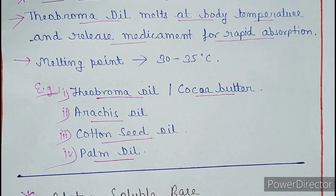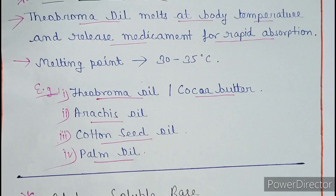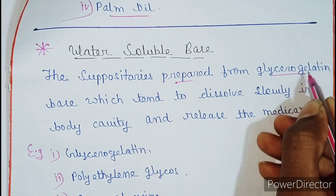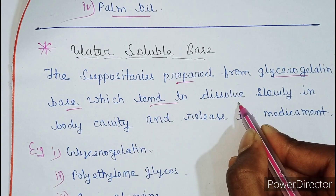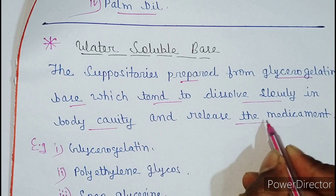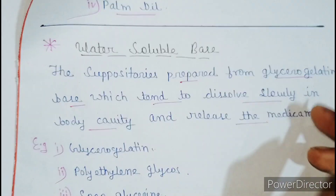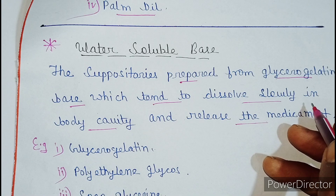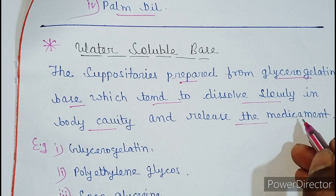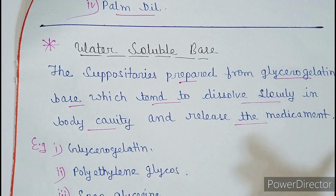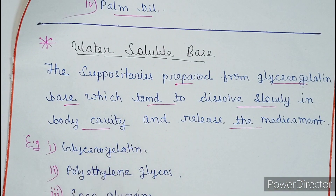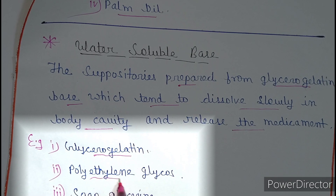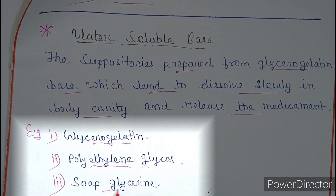The next one is water-soluble bases. Suppositories are prepared from a glycerogelatin base, which tends to dissolve slowly in the body cavity and release the medicament. It does not melt but slowly dissolves and then releases the medicament, showing the treatment effect. Examples of water-soluble bases are: glycerogelatin, polyethylene glycol, and soft glycerin.